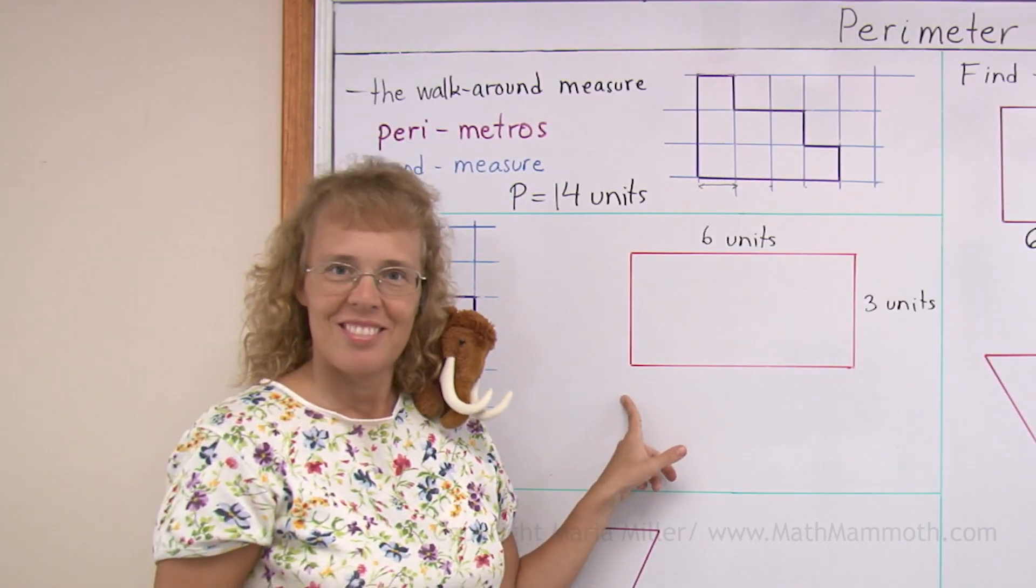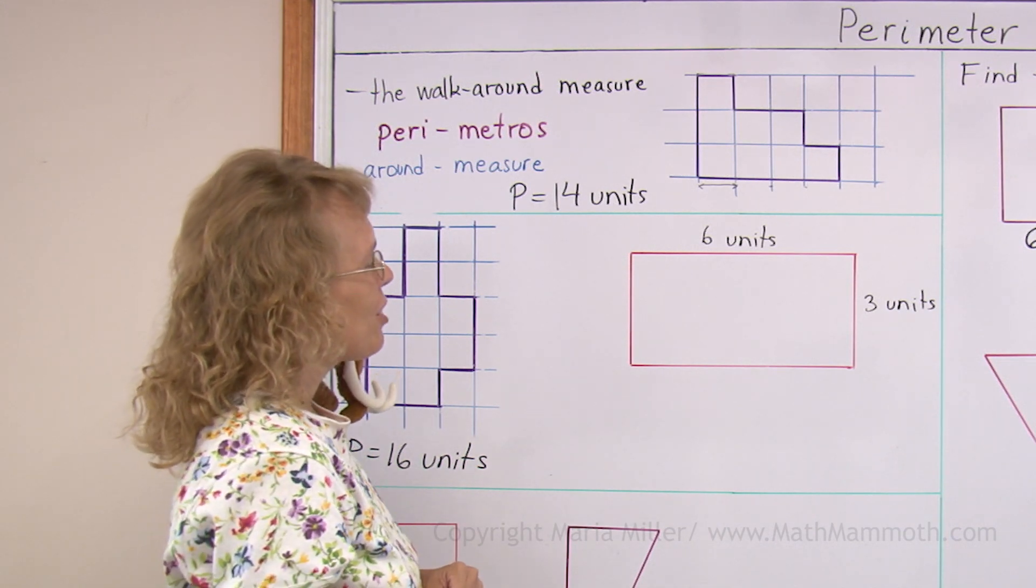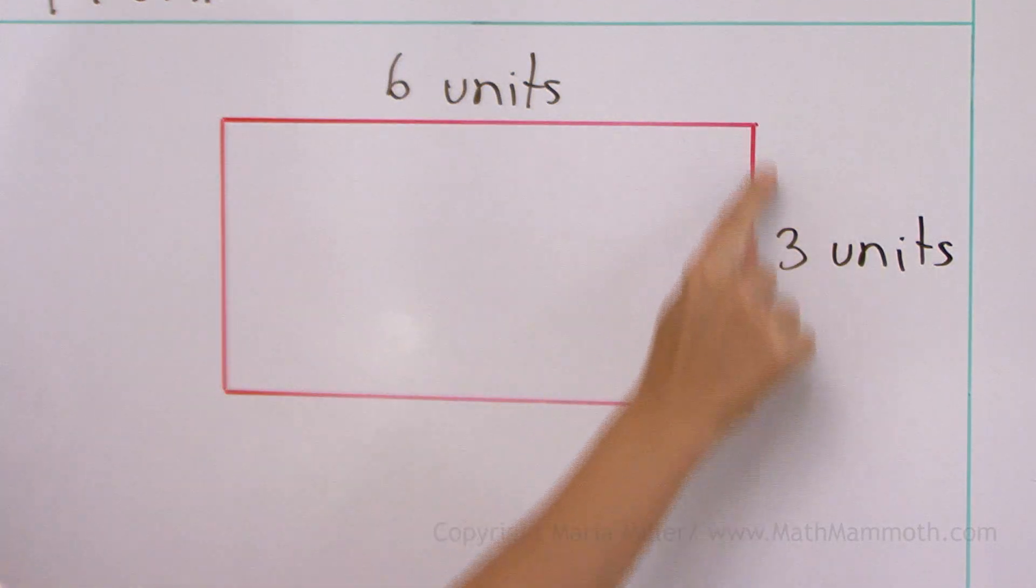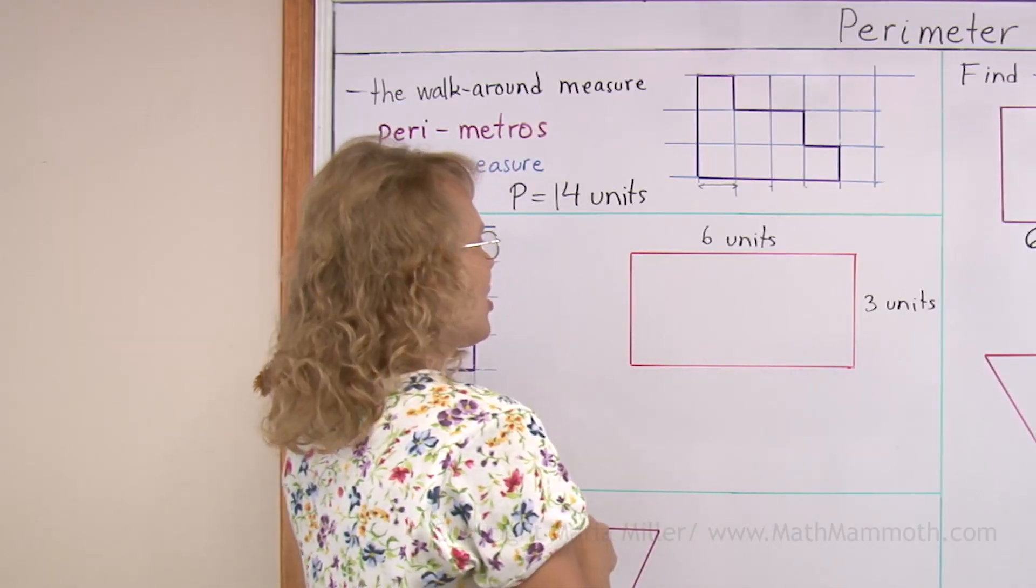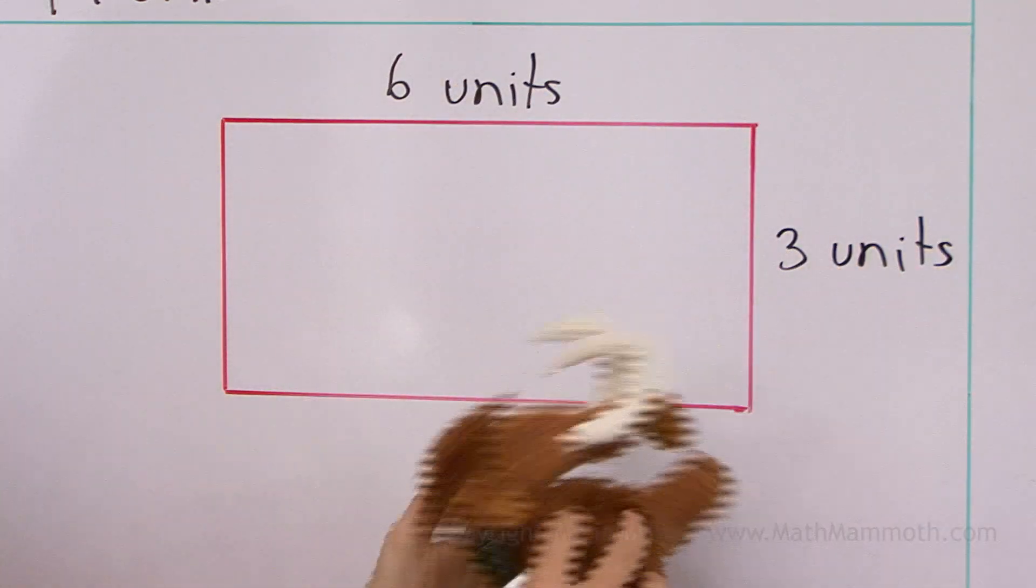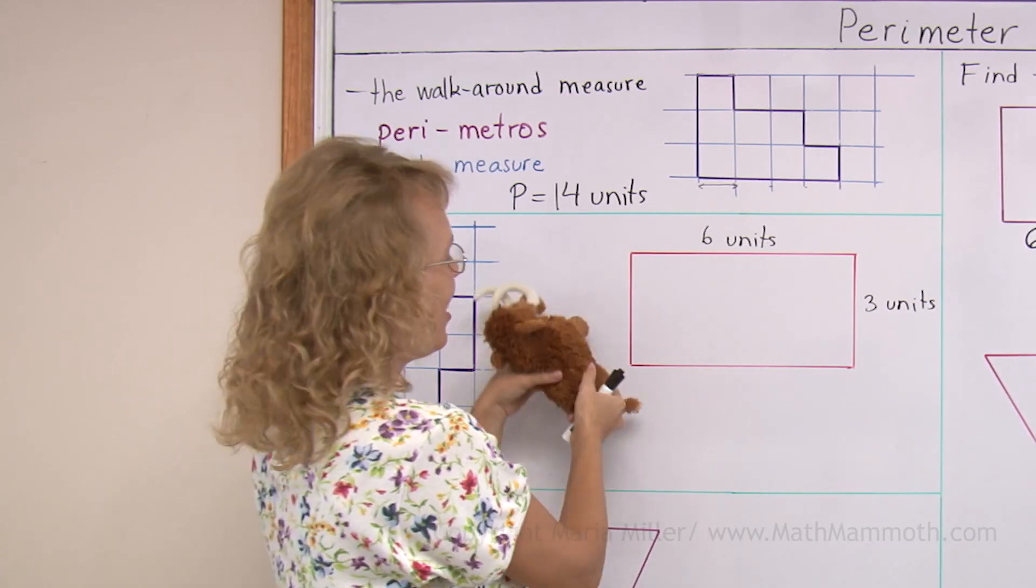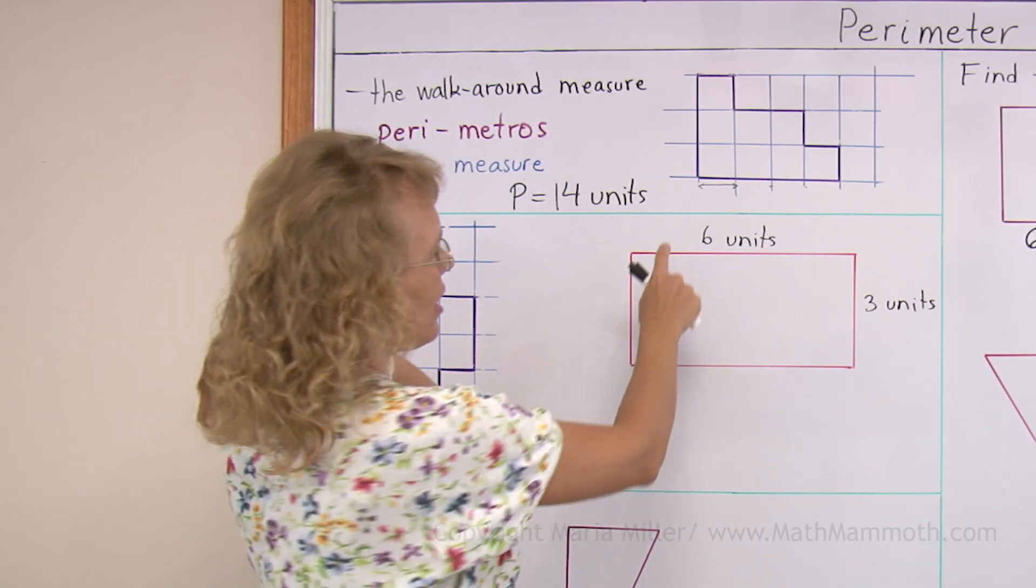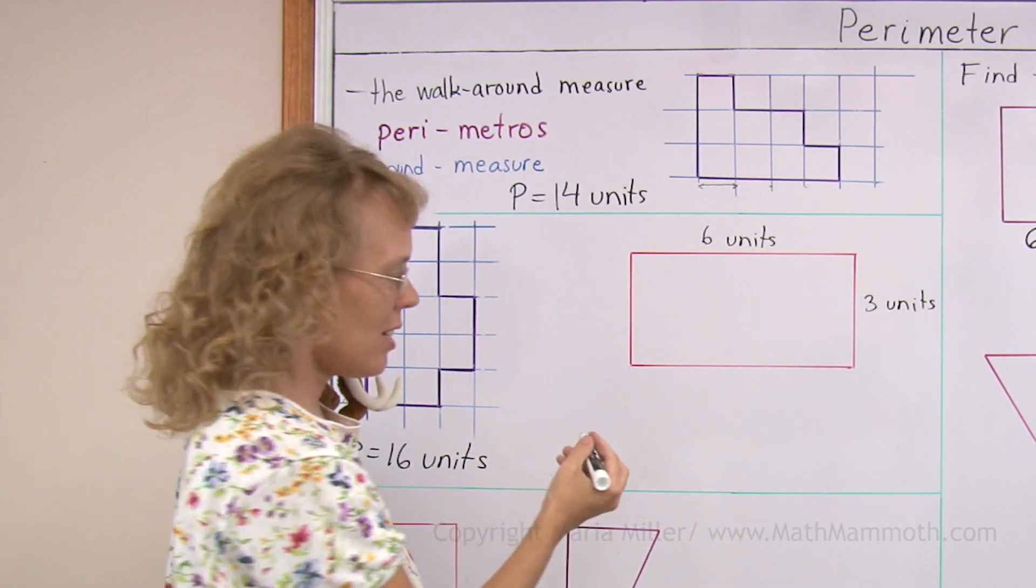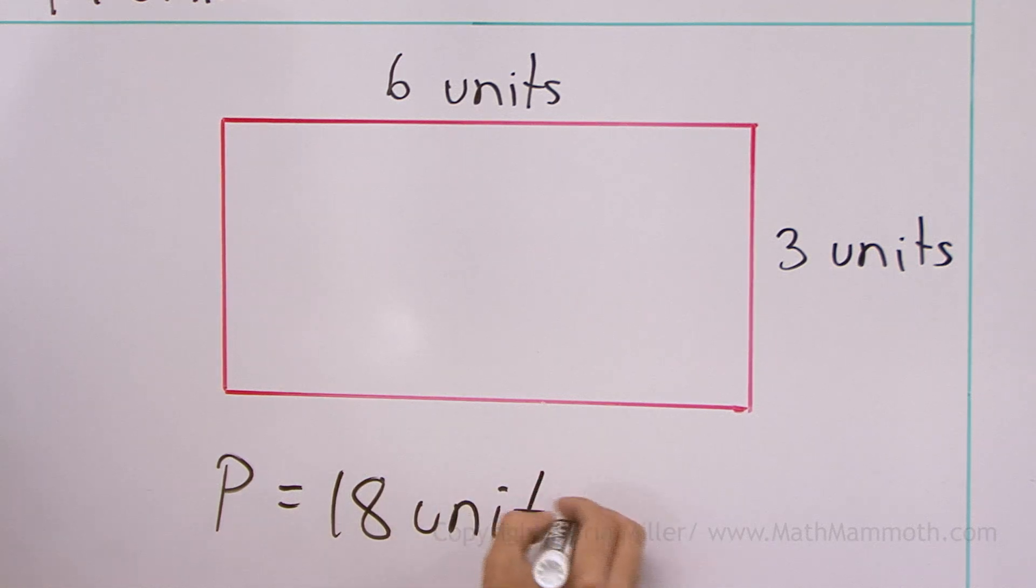How about here? I have a rectangle. This time we don't need to count the units one by one, because we're told that this side would be six units long, and this side would be three units long. So if Matthew goes around six units, three units, then he goes around here, and that is how much? Six units, right? And this side, three units. So we add six and three. It's nine. Then six and three is another nine. Nine and nine, eighteen. So we get eighteen units.